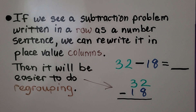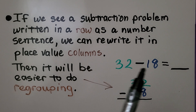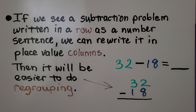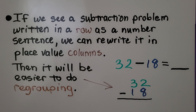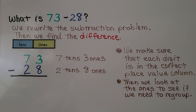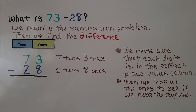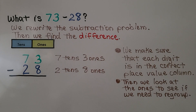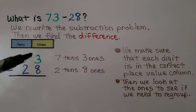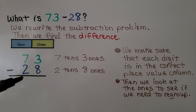If we see a subtraction problem written in a row as a number sentence, we can rewrite it in place value columns. Then it will be easier to do regrouping. We rewrite the subtraction problem in place value columns, then we find the difference.